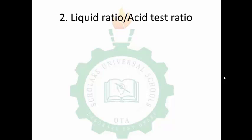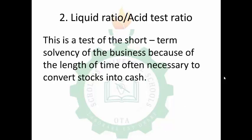The liquid ratio, also called the acid test ratio, compares current assets to current liabilities but excludes stock. It is a test of short-term solvency because it may take a long time to convert stocks into cash. The formula is: current assets minus stock, divided by current liabilities.